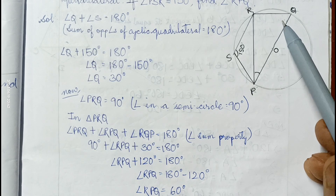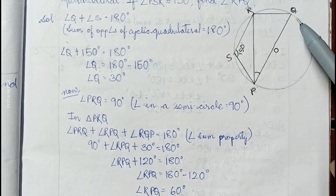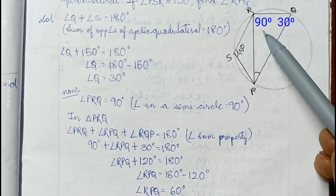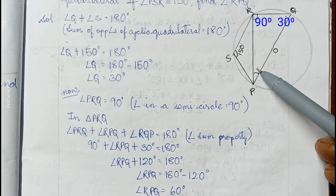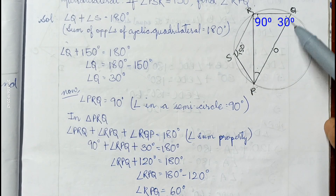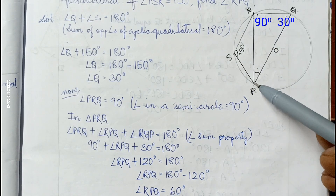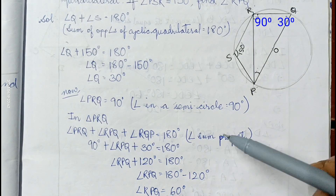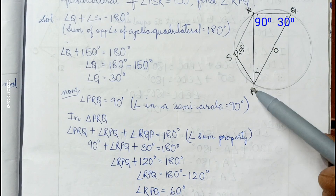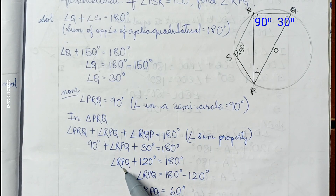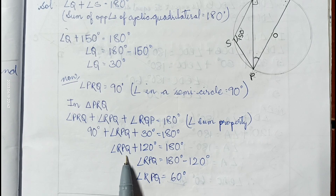Now we know the angle in a semicircle is 90 degrees. Here POQ is the diameter, so angle PRQ is 90 degrees. In triangle PRQ, by angle sum property: angle PRQ plus angle RQP plus angle RPQ equals 180 degrees. PRQ is 90, RQP is 30, so angle RPQ plus 120 equals 180, giving angle RPQ equals 60 degrees.